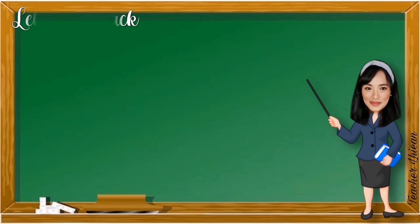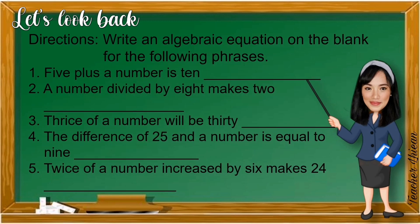Before we go through our lesson, let us have a quick review on our previous lesson. Write an algebraic equation on the blank for the following phrases. Number 1, 5 plus a number is 10. The keyword here is plus meaning we need to use addition and a number meaning we can use any letter from the alphabet. So, 5 plus S is equal to 10.